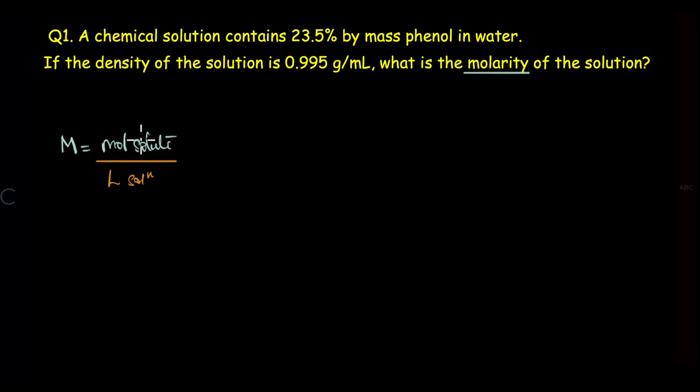Well, not directly, but they are definitely there in the question. You see, when we say 23.5% by mass phenol, what do we mean? It means we have 23.5 grams of phenol in 100 grams of solution.